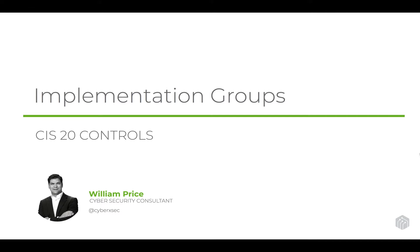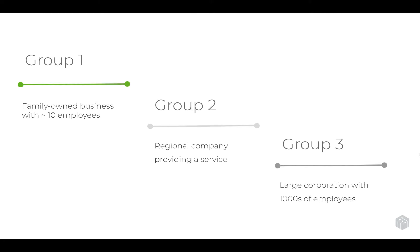Because these CIS 20 controls are meant for such a wide audience — small, large, and everything in between — it can't be a granular do-one-two-three-four-five-and-six approach. Instead, the way the CIS controls are broken down is into what's called implementation groups. You have to self-identify and self-assess to figure out which implementation group your organization should be a part of. Group one would be a family-owned business with around ten employees, while group three would be a large corporation of thousands of employees. Group two is the in-between.